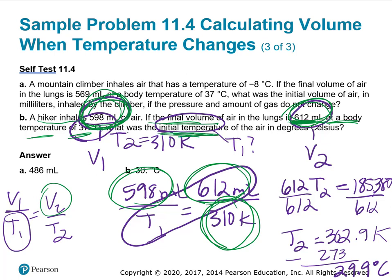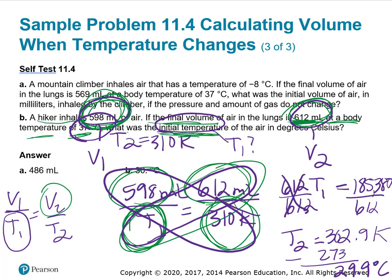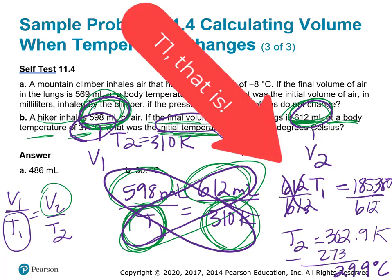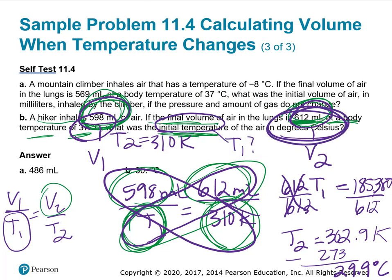What was the initial temperature? I need to find T1. I'm going to cross-multiply, so 612 times T1 equals 598 times 310, which is 185,380. Divide both sides by 612. That gives T2 at 302.9 Kelvin, but it wants degrees Celsius, so I subtracted 273, giving 29.9. I only need two significant figures, so that rounds to 30 degrees Celsius.